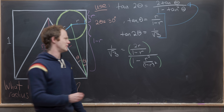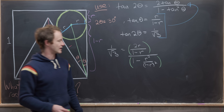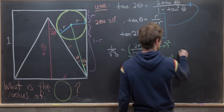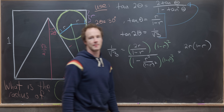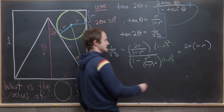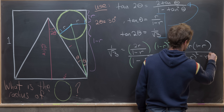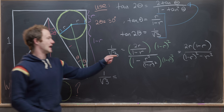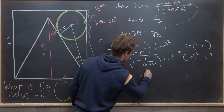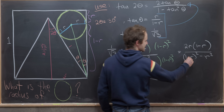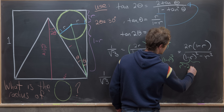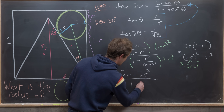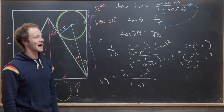To clear the complex fraction we multiply numerator and denominator by (1−r)². The numerator becomes 2r(1−r), with one factor of (1−r) canceling. The denominator becomes (1−r)² − r², which simplifies to 1 − 2r. So we have 1/√3 = (2r − 2r²) / (1 − 2r).